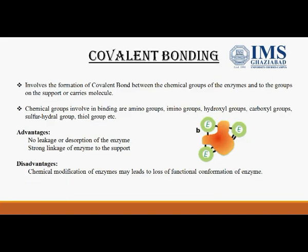The next method is covalent bonding, which is a widely used method of enzyme immobilization. It involves the formation of permanent covalent bonds between the chemical groups of the enzyme and the groups of the support or carrier molecule. Chemical groups involved include amino groups, hydroxyl groups, carboxylic groups, sulfhydryl groups, and thiol groups of the side chains of amino acids. The advantage is there is no leakage or desorption problem and there is strong linkage of the enzyme to the support. The disadvantage is that covalent linkage can modify the enzyme active site, leading to loss of enzyme conformation.